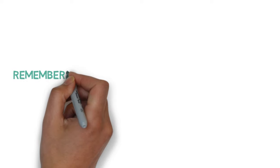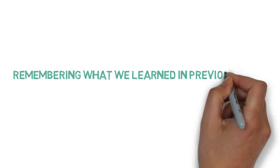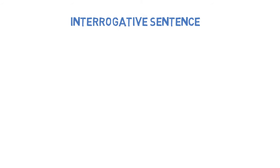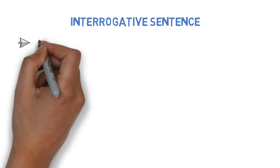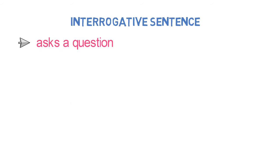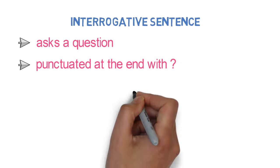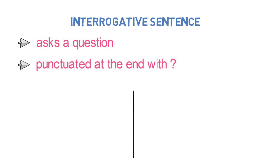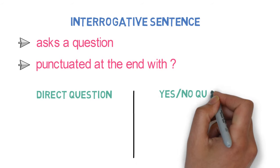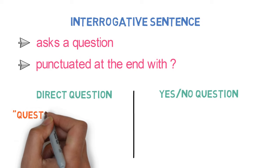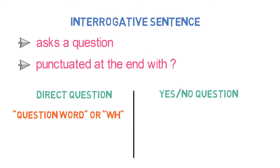Let's first quickly remember what we learned in our previous video. We learned about the interrogative sentence. An interrogative sentence asks a question. It is punctuated at the end with a question mark. There are generally two types of questions: direct question and yes-no type of question. A direct question begins with a question word or WH words in English.